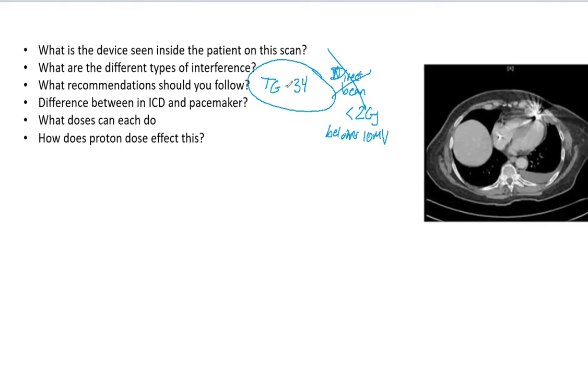So now what is the difference between an ICD and a pacemaker? As I mentioned, pacemakers use that electrical pulse to prompt the heart to beat correctly and consistently. An implantable cardioverter defibrillator treats the tachycardia and resets the heart via an electric shock. So ICD is much more violent.